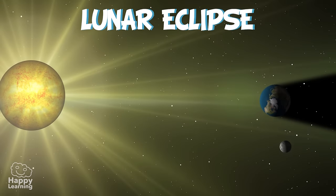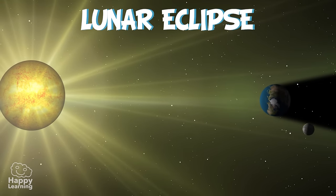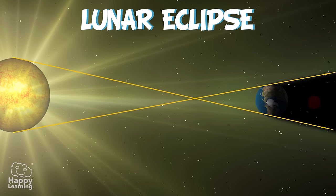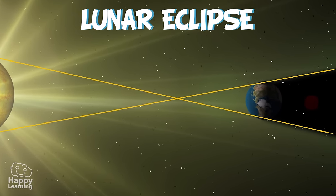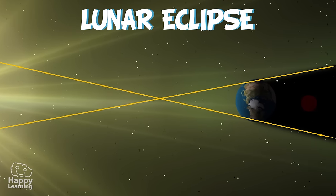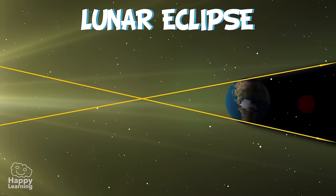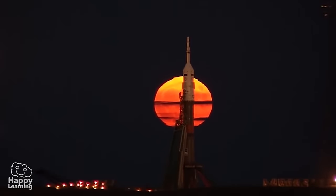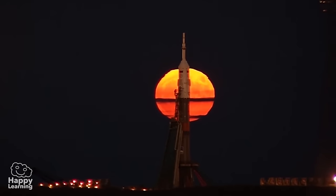The lunar eclipse is when the Earth is situated between the Moon and the Sun, making the Earth block out the Sun's rays which would be shining on the Moon, creating a shadow and darkening it. This phenomenon allows us to see the Moon in a reddish colour, almost as if it were bleeding.